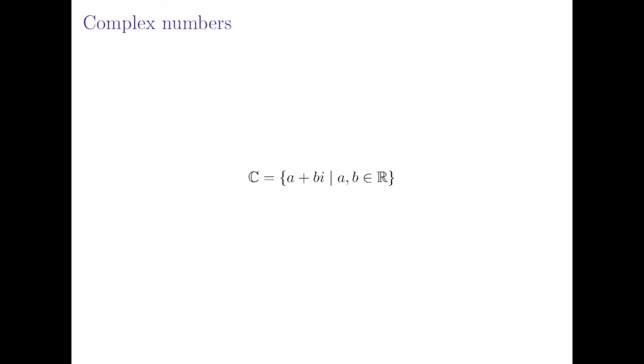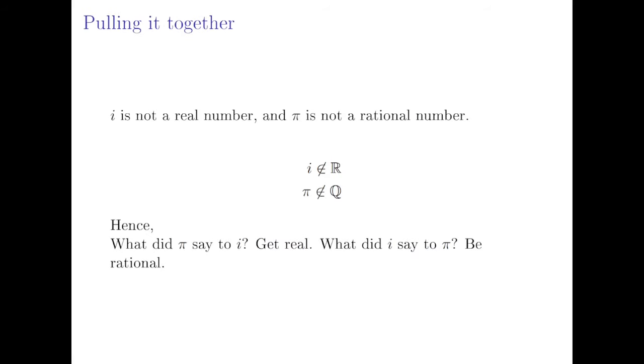So the complex numbers contain the real numbers, but not all complex numbers are real. We now have everything we need to start to understand the joke. i is not a real number. I mean it contains i, by our very simple definition it is not a real number.